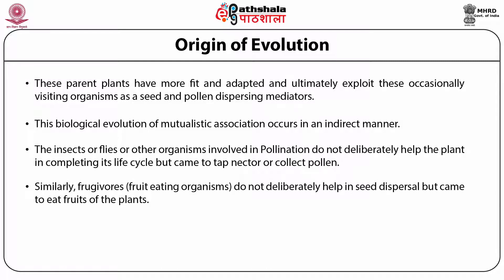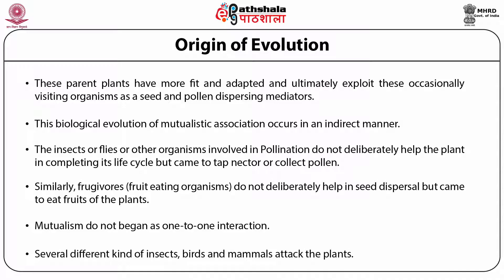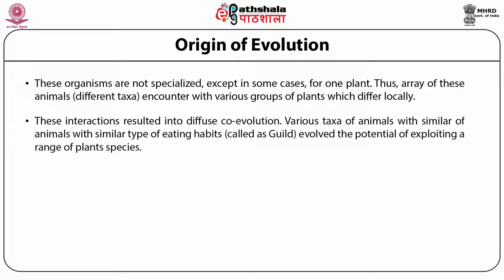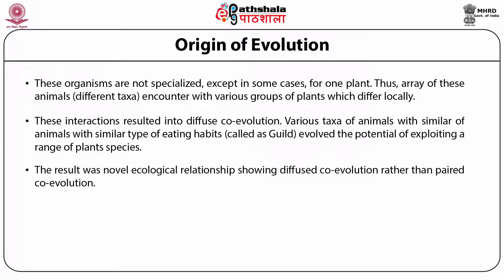Insects, frugivores or birds came to the plant to consume nectar, pollen or fruits, and meanwhile accidentally carried seeds or pollen away from parent plants. These parent plants, being more fit and adapted, ultimately exploit these occasionally visiting organisms as seed and pollen dispersing mediators. This biological evolution of mutualistic association occurs in an indirect manner. The insects or flies or other organisms involved in pollination do not deliberately help the plant complete its life cycle but came to tap nectar or collect pollen. Similarly, frugivores do not deliberately help in seed dispersal but came to eat fruits.